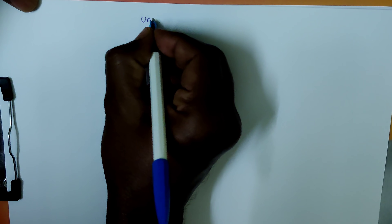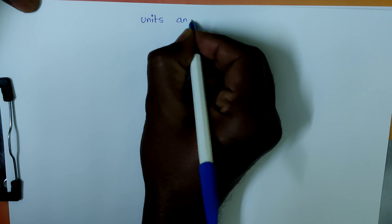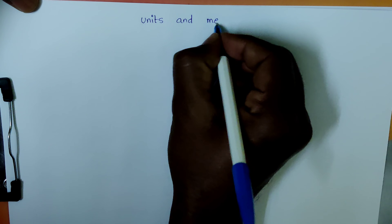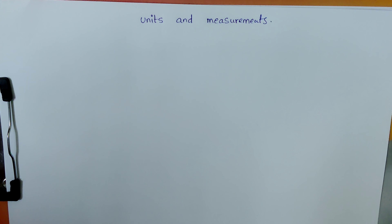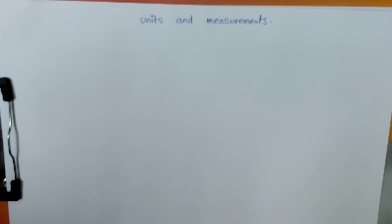Before going to discuss Units and Measurements, we should know what physical quantities are. Physical quantities are quantities that exist in the world, such as mass, length, time, amount of substance, velocity, acceleration, work done, force, power, etc.